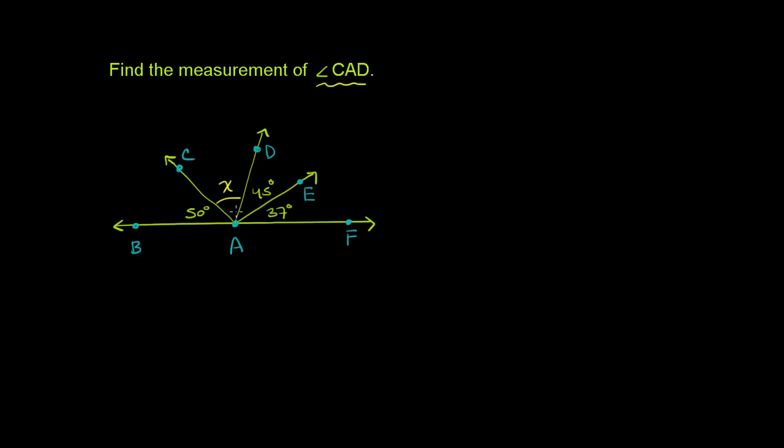And the one thing that might jump out at you is that the other angle's measures are given here: 50 degrees, 45 degrees, and 37 degrees. The other thing that might jump out at you is if you take the outer edge of all of these angles, which are adjacent to each other, if you take the outer edge, it forms a straight angle. So this entire angle is going to be 180 degrees.